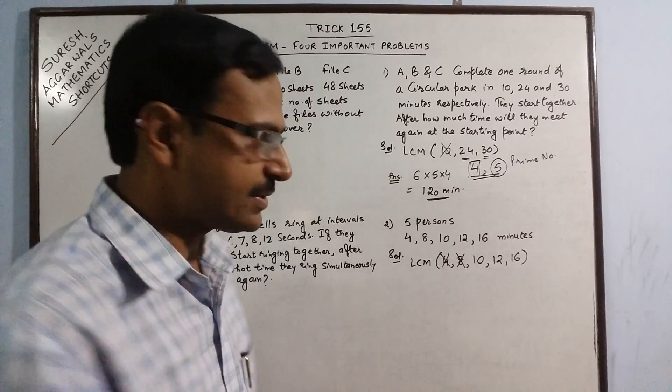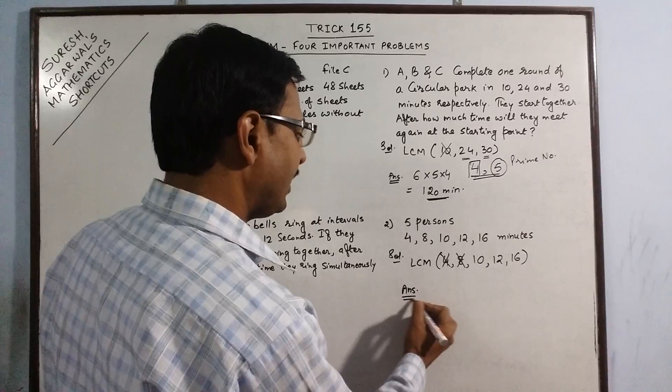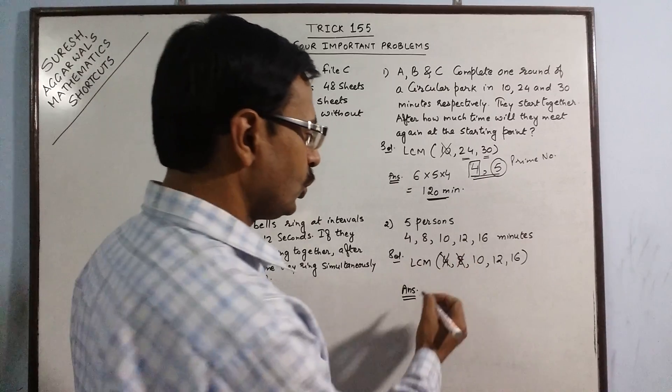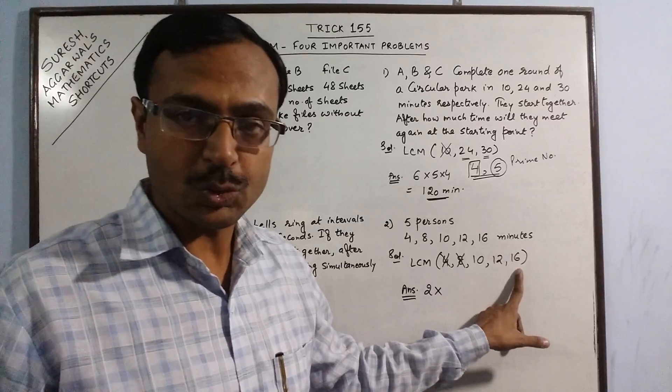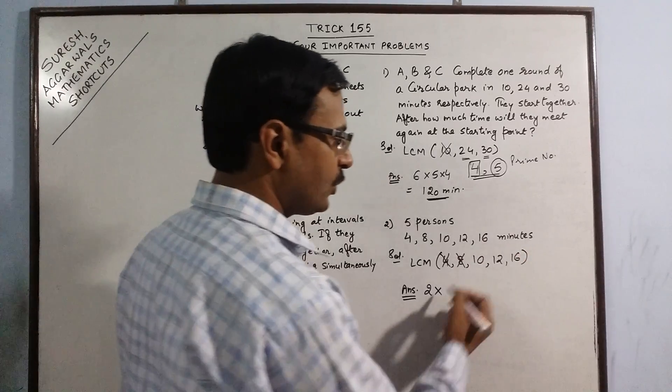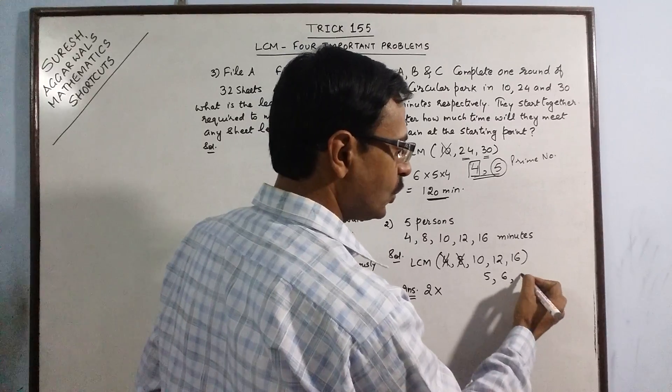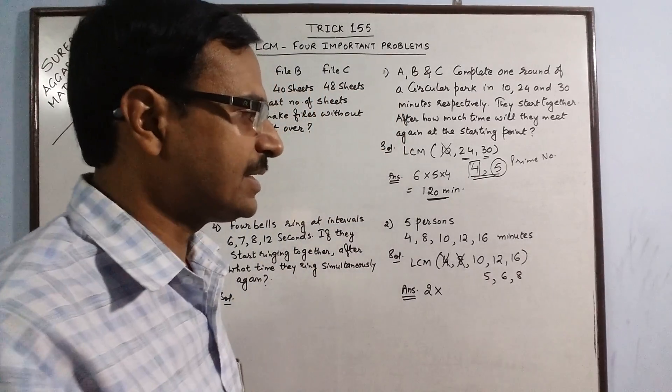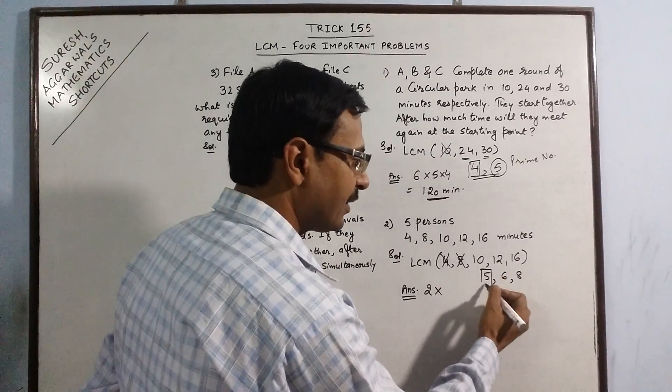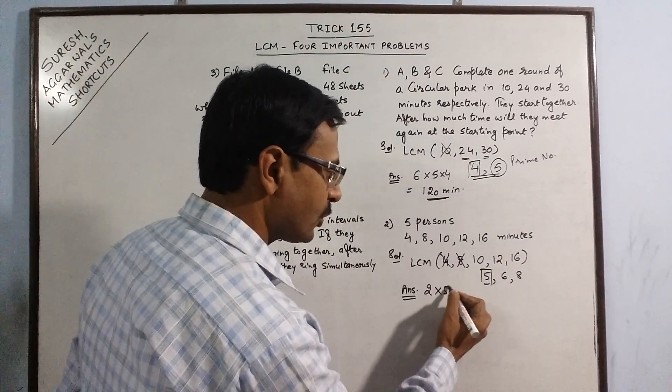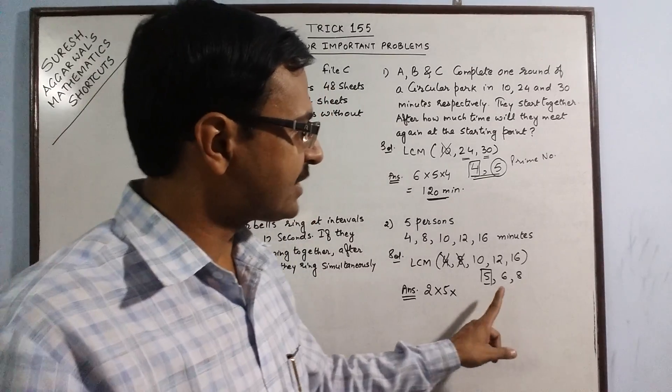Now we have just 3 numbers: 10, 12, and 16. Our answer will have 2 as one of the factors because these 3 numbers are divisible by 2. What is left behind? 2 twos are 10, 2 sixes are 12, and 2 eights are 16. Now we have a prime number. This 5 is a prime number, so 5 comes automatically in the answer. Now what we have left behind is 6 and 8.